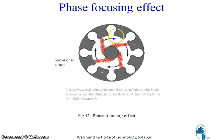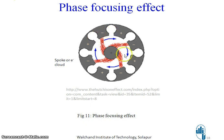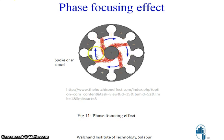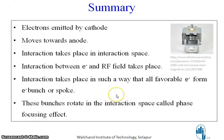All favorable electrons form an electron bunch, also called a spoke or electron cloud. These electron clouds rotate in the interaction space from one anode cavity to the alternate anode cavity, because adjacent cavities alternate between negative and positive RF cycles. This rotation of the electron cloud in the interaction space is called the phase focusing effect, and due to this effect, oscillations are created in the magnetron.